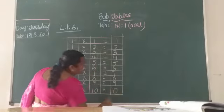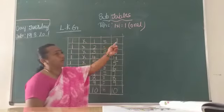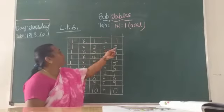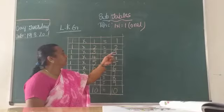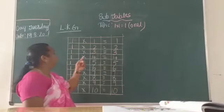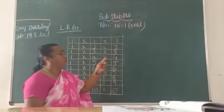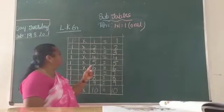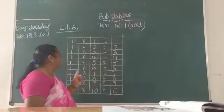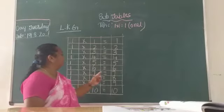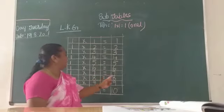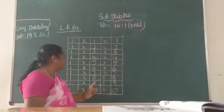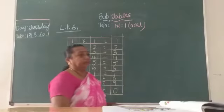Say children, once more: 1 × 1 = 1. 1 × 2 = 2. 1 × 3 = 3. 1 × 4 = 4. 1 × 5 = 5. 1 × 6 = 6. 1 × 7 = 7. 1 × 8 = 8. 1 × 9 = 9. 1 × 10 = 10.